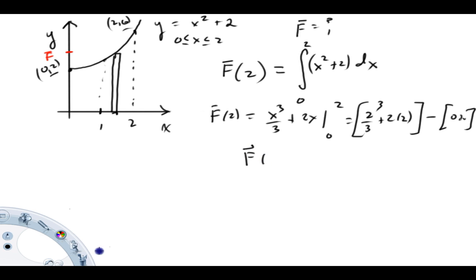So next line, average function value times 2 equals, let's see, 8 thirds plus 4. That's what that's going to simplify down to. Which is going to be 8 thirds plus 12 thirds. 20 thirds, I believe.